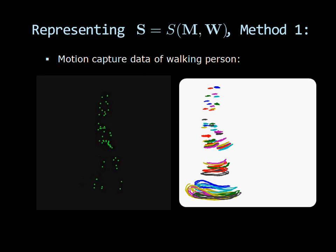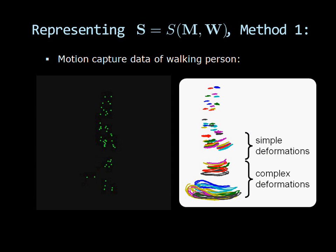The video on the left shows the motion capture data of a walking person. On the right, the image shows trajectories of points on the person's body. Note that some body parts present complex deformations. Other parts present relatively simple deformations. And some parts remain nearly rigid.